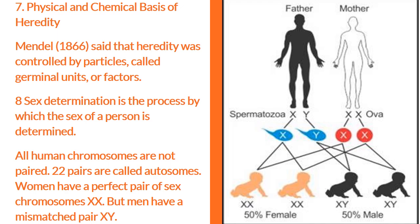Sex determination is the process by which the sex of a person is determined. All human chromosomes are not paired — 22 pairs are called autosomes. Women have a perfect pair of sex chromosomes XX, but men have a mismatched pair XY.